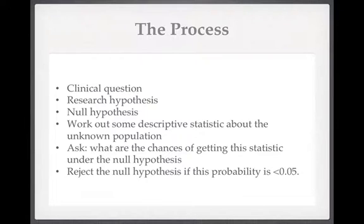We go about this the same way we usually would. We form a good clinical question, then come up with a research hypothesis — in this case: is my consultant's estimated blood loss greater than the average for emergency open abdominal aortic aneurysm repair? We'd have a null hypothesis stating there is no difference between the two, work out a descriptive statistic — here the mean of 3000 millilitres — and then work out the chances of getting this statistic under the null hypothesis.